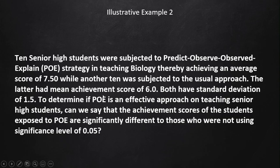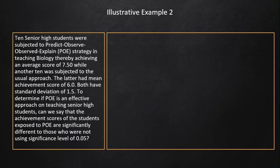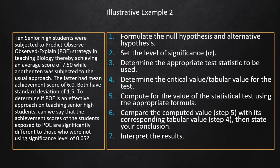Our problem is to assess whether the POE strategy is an effective approach in teaching senior high students — specifically, whether there is a significant difference in scores between these two groups of 10 students. We will use 0.05 as the level of significance and assume a normal probability distribution. We will follow the same seven steps.